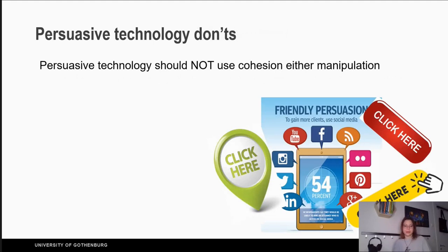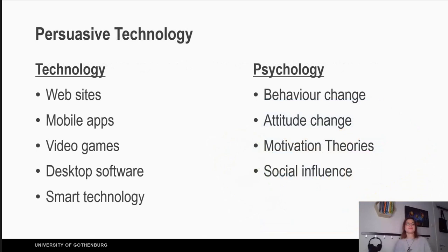Persuasive technology shouldn't use manipulation or coercion — we shouldn't trick the user into doing something. This is bad design, or better, evil design. Persuasive technology is multidisciplinary: it's a combination of technology — websites, mobile applications, video games — and psychology, including behavioral change, attitude change, motivational theories, and social influence.